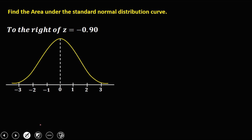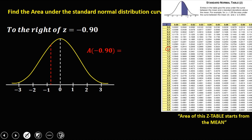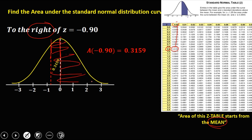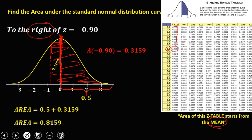For this given, find the area to the right of Z equals negative 0.90. Let's assume that this one is negative 0.90. To solve for the area: 0.9 and 0.00 — the area of negative 0.90 is 0.3159. Since it starts from the mean, this 0.3159 belongs to this area. In the problem, we need to find the area to the right of negative 0.90. Since the area of half the curve is 0.5, the total area is 0.5 plus 0.3159, so the area is equal to 0.8159.